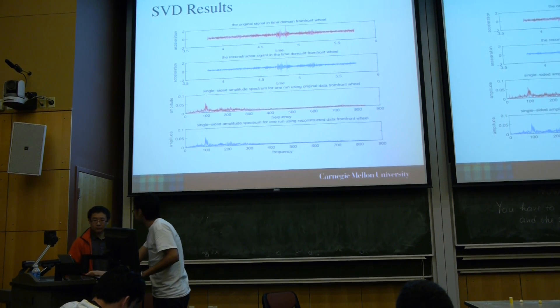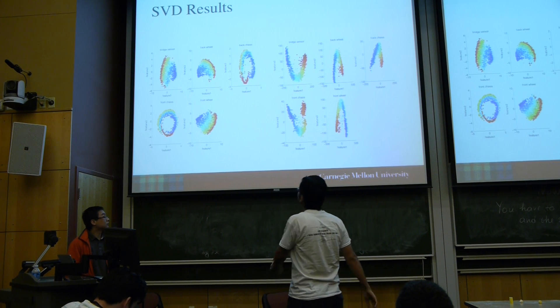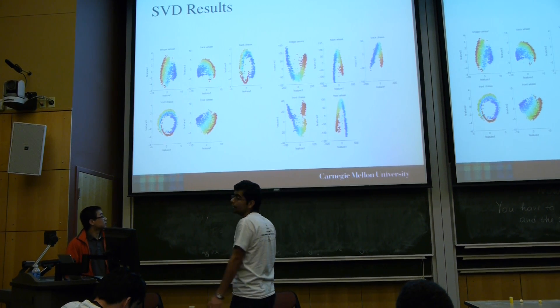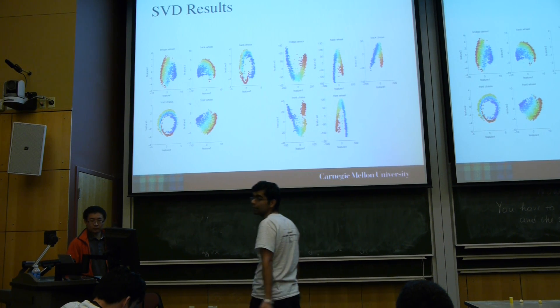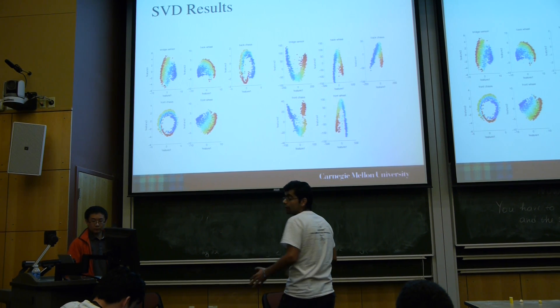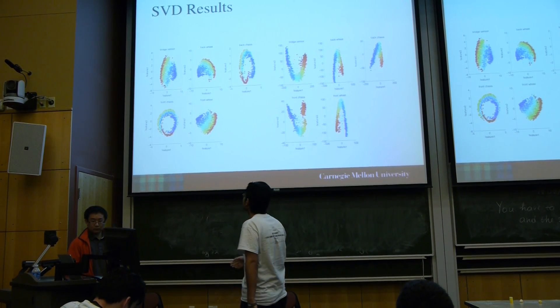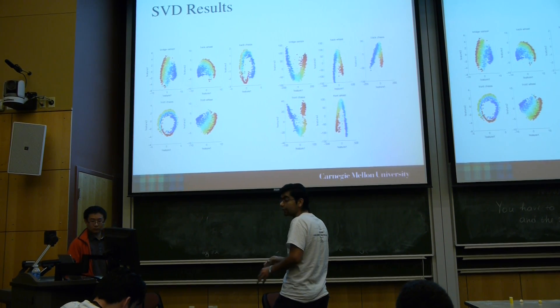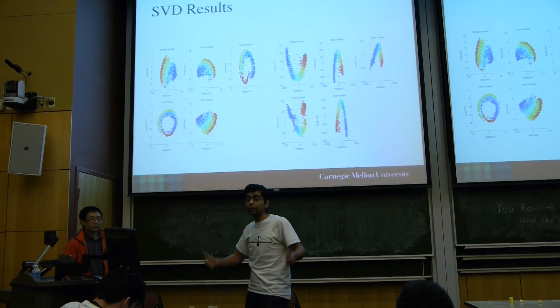But how about if we use two features? Here we use two features. Because we wanted to investigate different damage scenarios, we considered 31 cases, and for each of them we tested 30 times. So we have 31 labels.